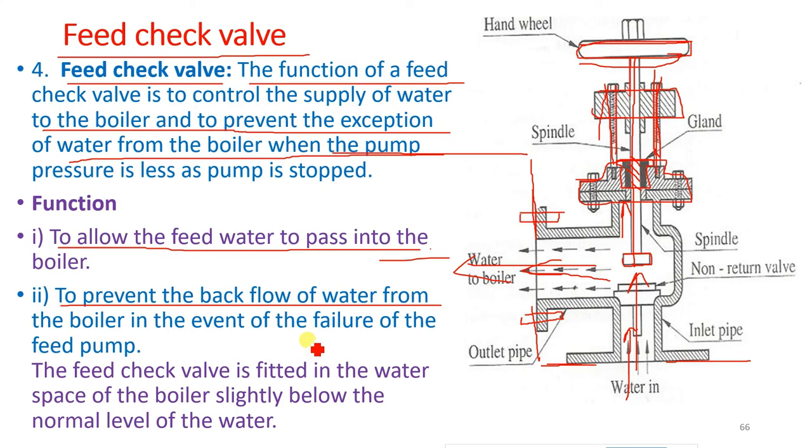If the feed pump is failed, this feed check valve does not allow water from boiler to revert back to the hot well. So it allows water to move in one direction only, therefore it is called as a non-return valve.